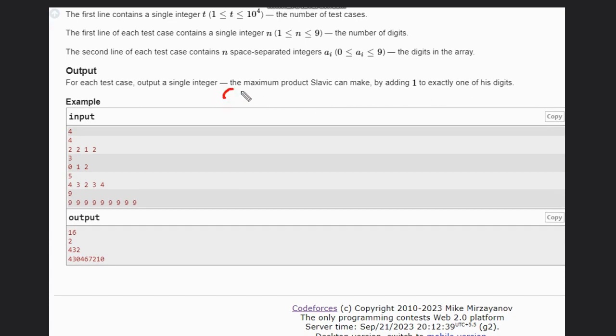Okay, so let's see some example. Suppose we have 2, 2, 1, 2. If we increase this 1 to 2, then we have 1, 2, 3. So our product will be 3 times 2, which is 6, times 2 is 12. So the product will be 12.